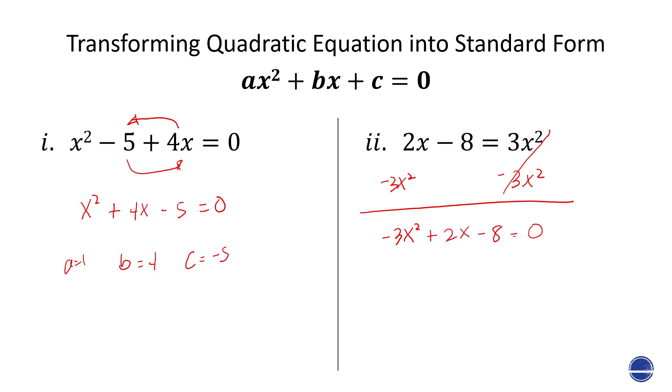A is negative 3, B is 2, and C is negative 8. As you notice, when we're doing the transforming, there's no mathematical operation that is involved. Of course, when you subtract a term on both sides, that's a mathematical operation.